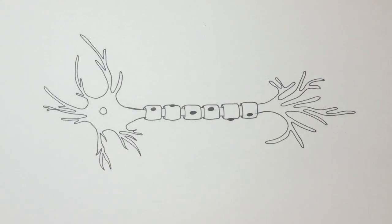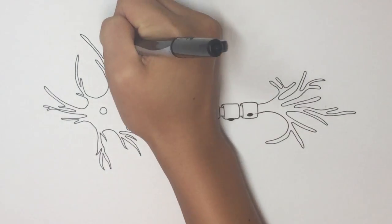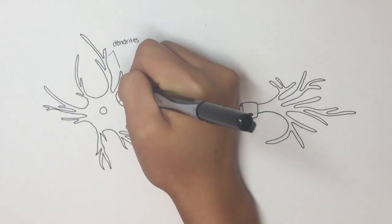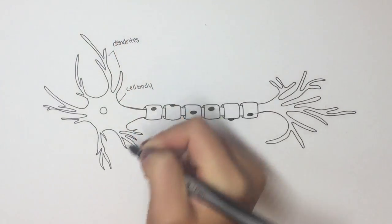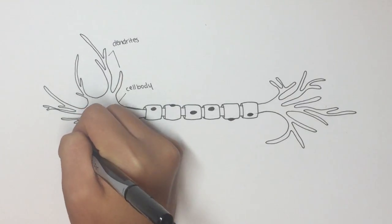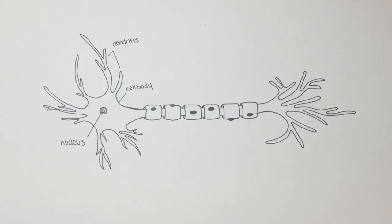Here is the basic structure of a multipolar neuron. We have the dendrites, the cell body, which contains all the necessary organelles like the nucleus, and we have the axon branch.